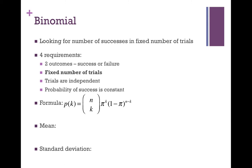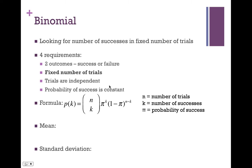The binomial formula is: P(k) = (n choose k) × π^k × (1−π)^(n−k). Here n is the number of trials, k is the number of successes, and π is the probability of success. The term π^k accounts for the successes, (1−π)^(n−k) accounts for the failures, and n choose k counts the number of ways that outcome can occur. For example, with two girls and two boys, the two girls could be the first two kids, the last two, the middle two, the first and third, etc. — that's what n choose k counts.